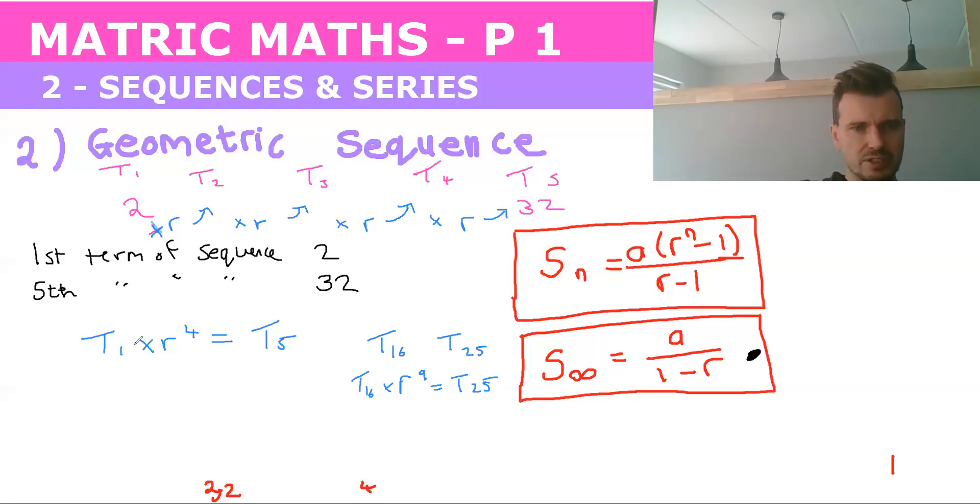So let's put in the values. T1 was two, T5 was 32. And all that's left to do is to divide by two on both sides to cancel, and this becomes 16. R^4 equals 16, and then you know that r is equal to two.